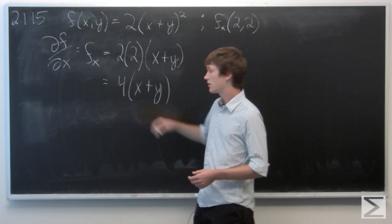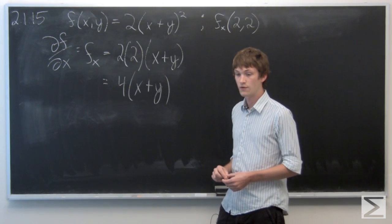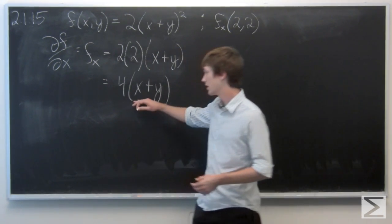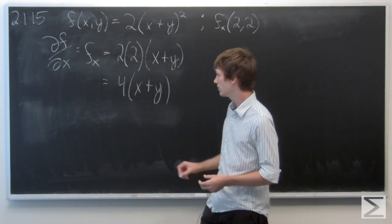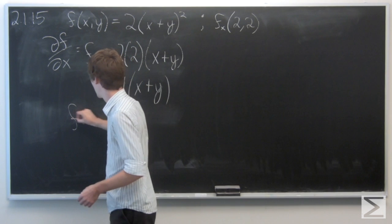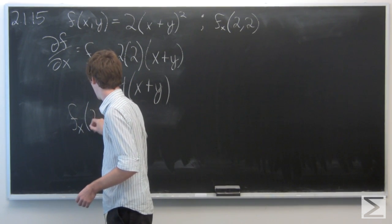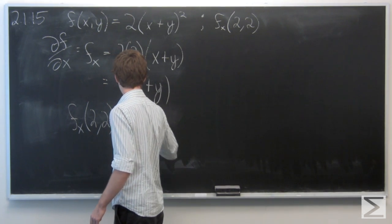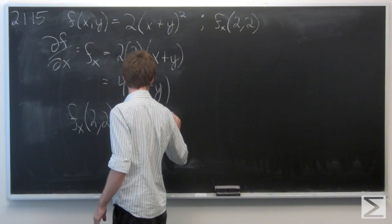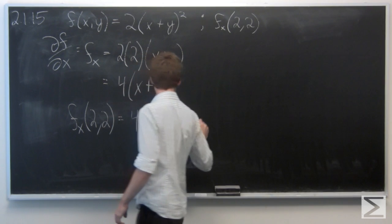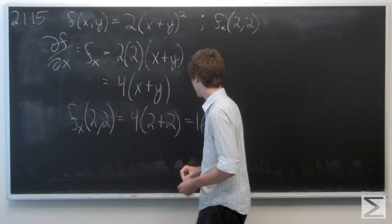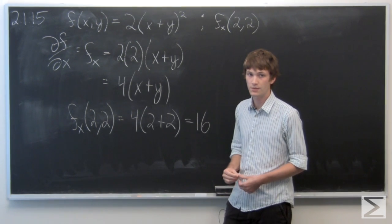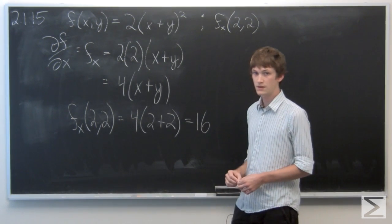Now we're going to calculate the partial derivative of f with respect to x at the point. We're going to plug in x equals 2 and y equals 2. We find that the partial derivative with respect to x at that point is 16.